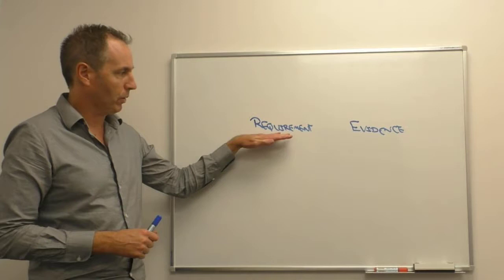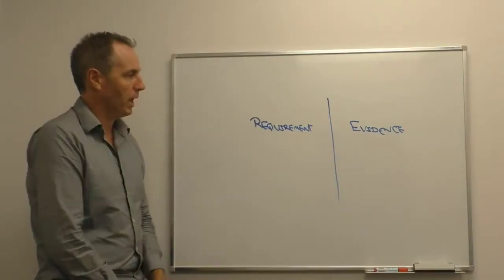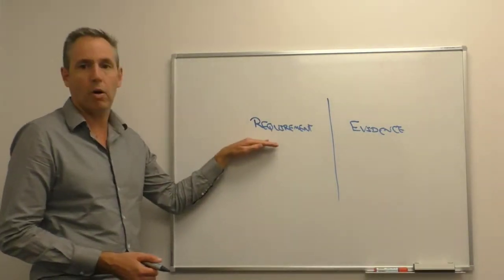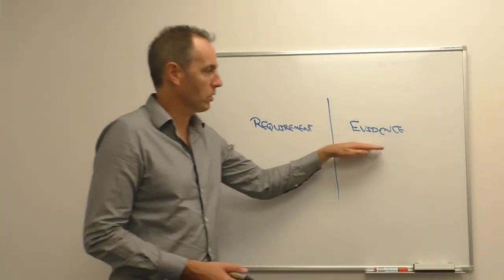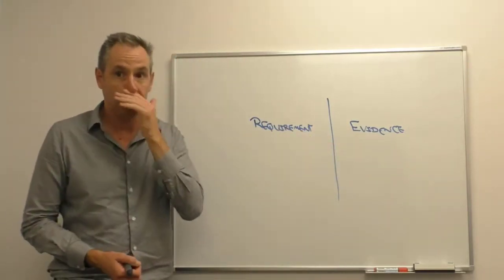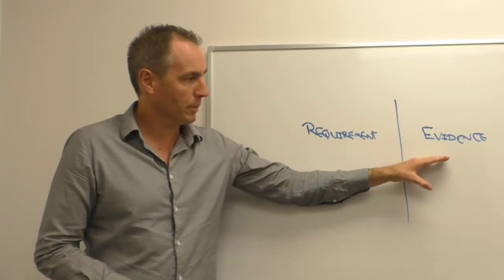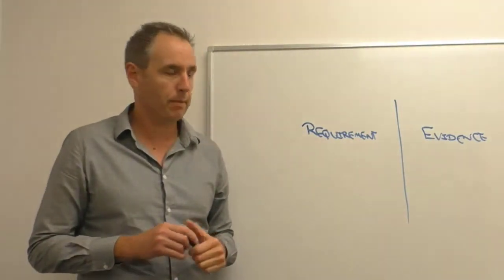So number one, two critical elements that must be in any non-conformance or conformance statement is we have to give some reference to the requirement, as well as we do need to cite what was the evidence that demonstrates conformance or non-conformance against that requirement. They're fundamental, and both of those elements must be reflected in your conformance or non-conformance statement.